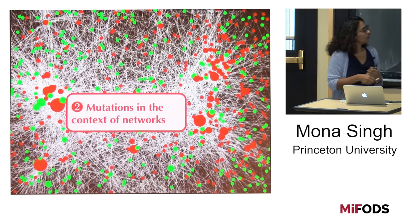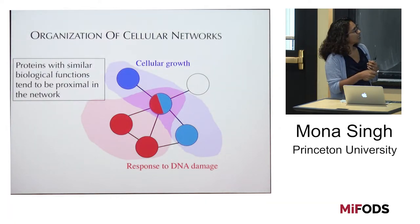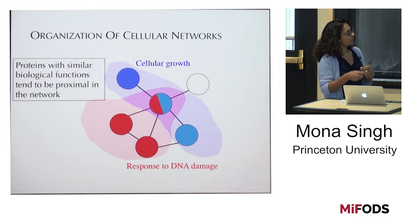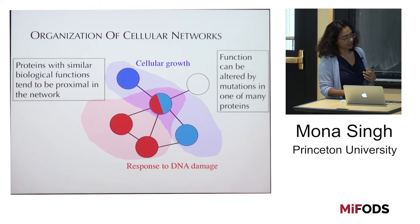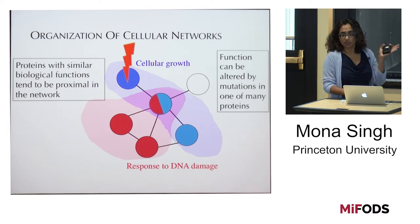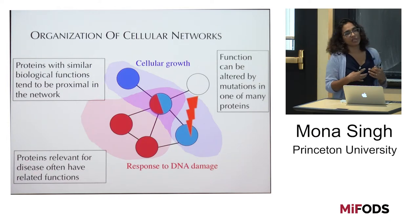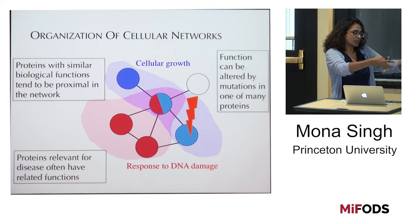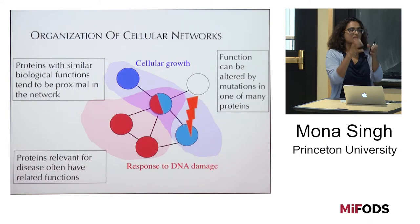Now I'm going to tell you about mutations in the context of networks. Biological networks have structure — proteins with similar biological functions tend to be near each other in the network, shown here by color. This means function can be altered by mutations in one of many proteins. If we want to interfere with cellular growth, there could be a mutation here, or maybe a mutation somewhere else. Proteins relevant for a disease often have related functions because the disease tends to disrupt the same functionality. So now instead of asking if mutations fall in interesting places, I'm going to ask: are there regions of the network that are interesting?